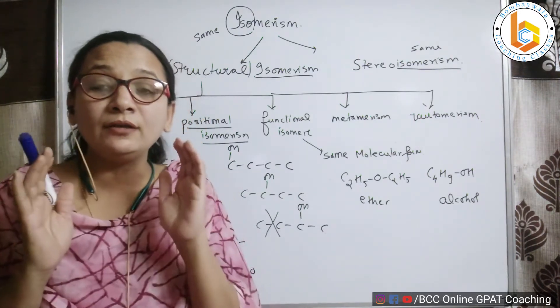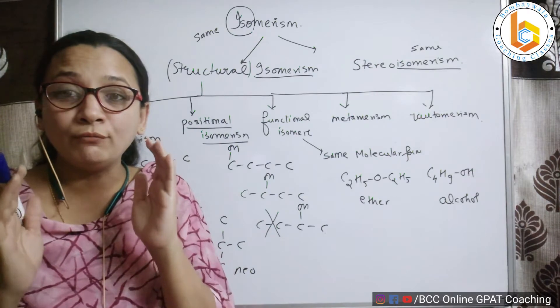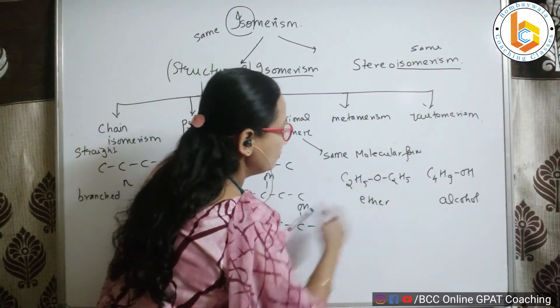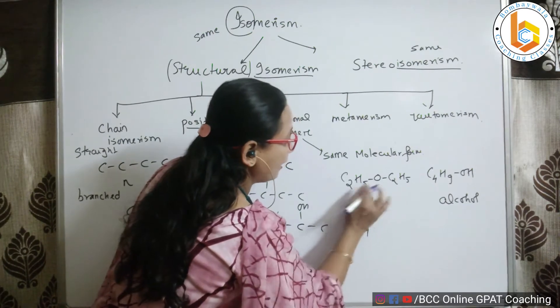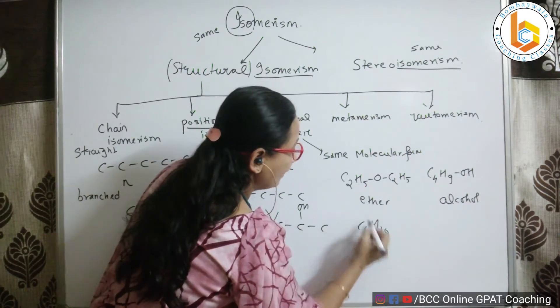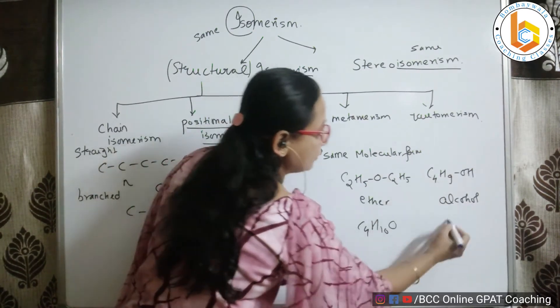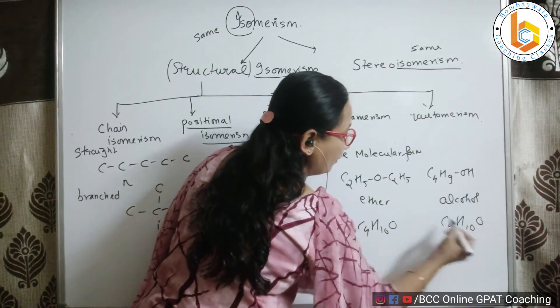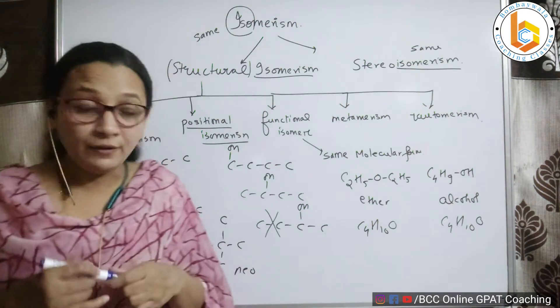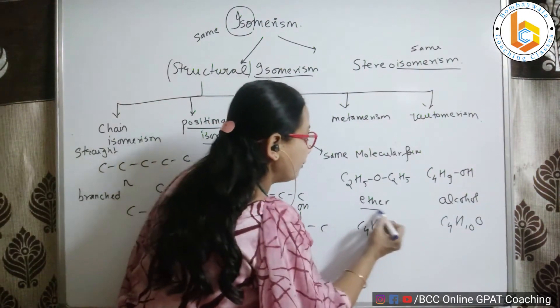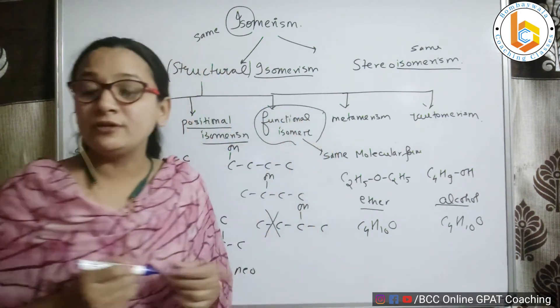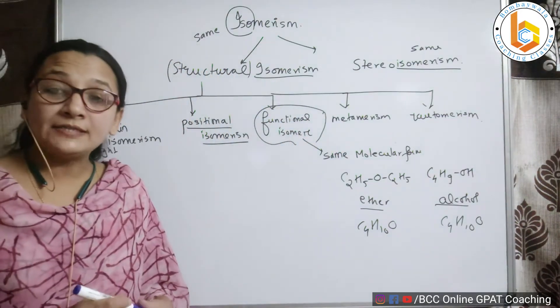Look at the molecular formula of these two. Suppose I write it as a whole: C2, C2, C4, H5 plus 5, H10 and OH. Here also C4, H10, 9 plus 1, 10 and OH. So they have the same formula but they have different functional groups, hence they are referred to as functional isomers.